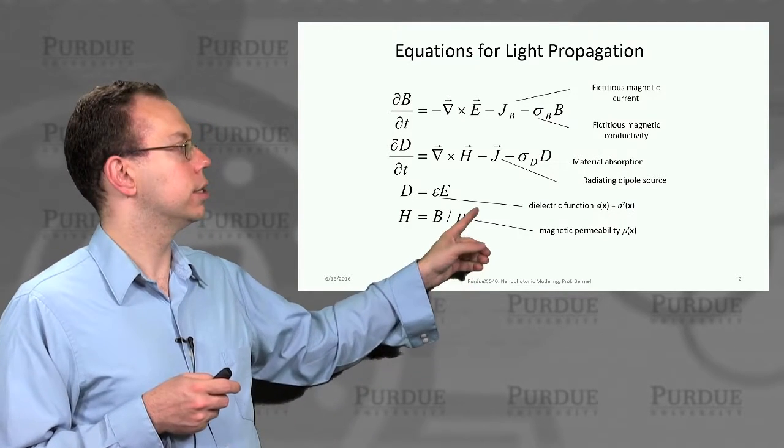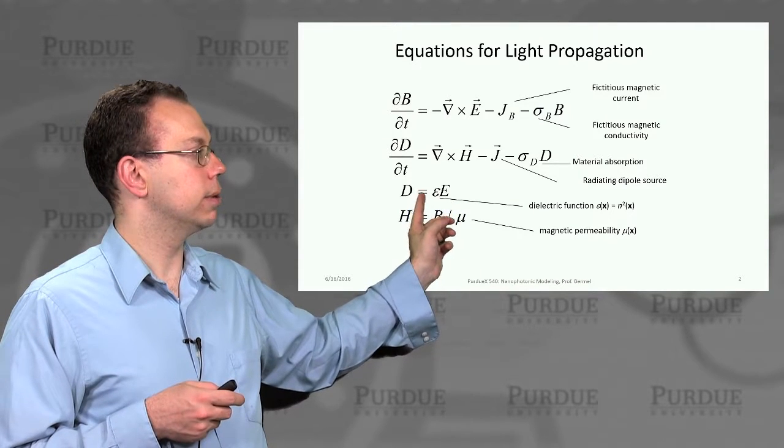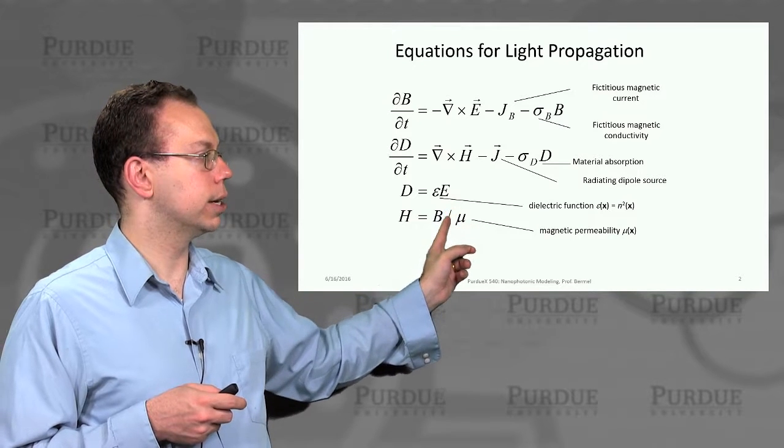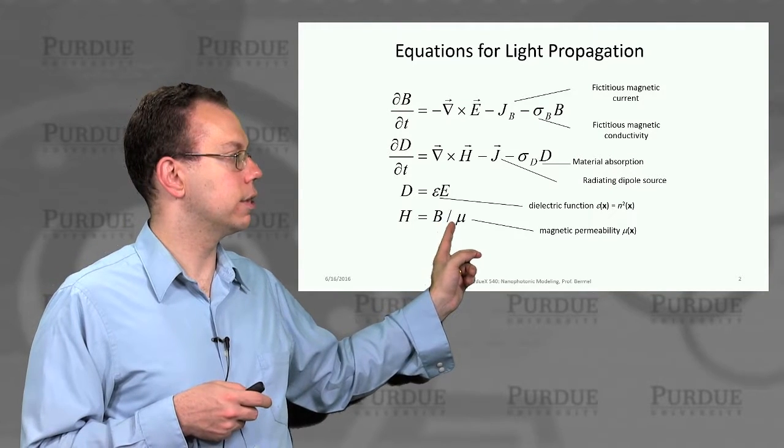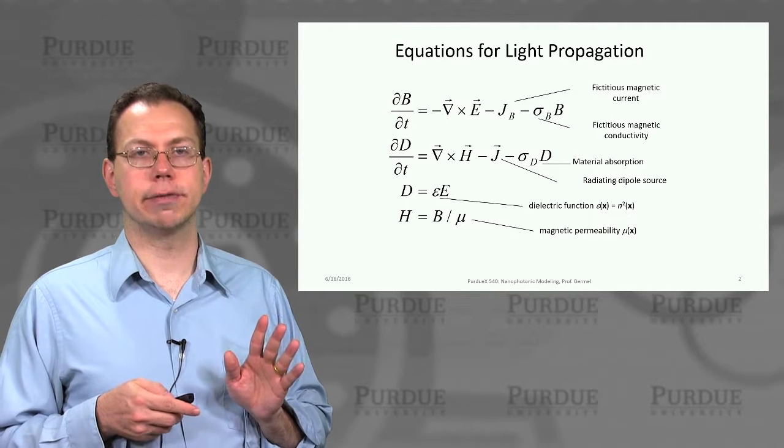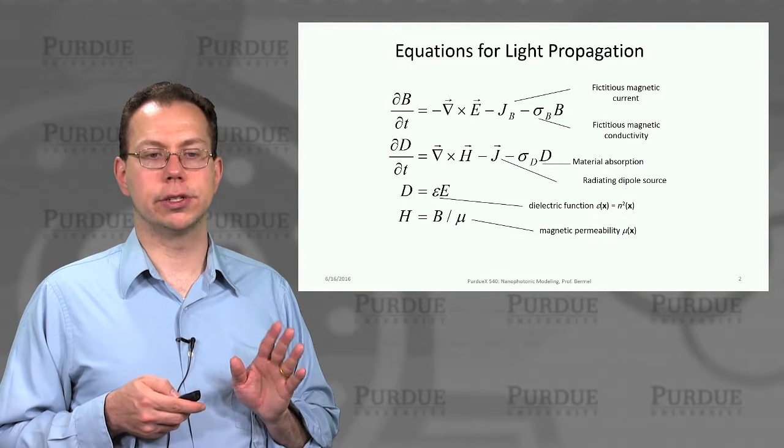And then you have these two auxiliary equations, of course, which define the relationship between displacement field and electric field. Basically, D equals epsilon E, and then the H field equals the magnetic field B divided by mu, the permeability. So then this is actually a complete set of equations we need in order to solve Maxwell's equations directly.